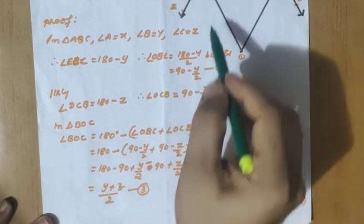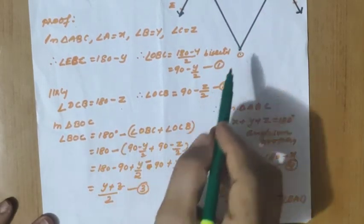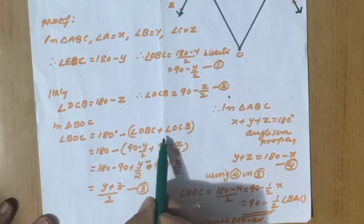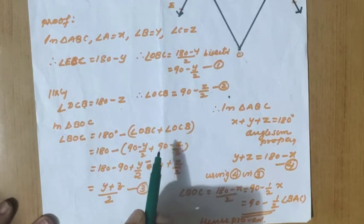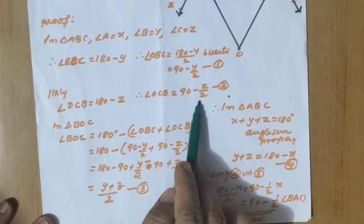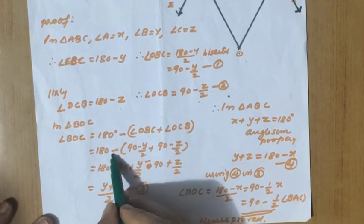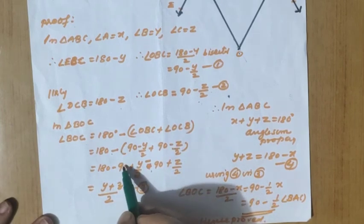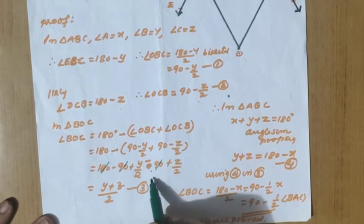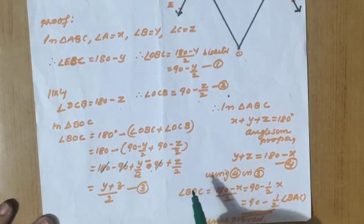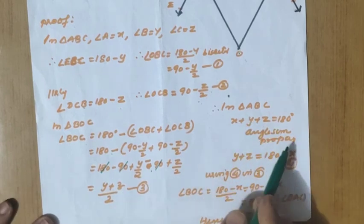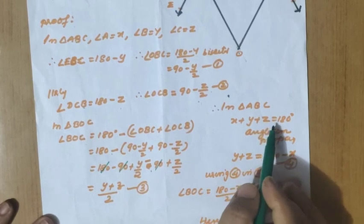Now consider triangle BOC and apply the angle sum property: angle O plus angle B plus angle C equals 180 degrees. So angle BOC equals 180 minus angle OBC plus angle OCB, which is 180 minus 90 minus y by 2 plus 90 minus z by 2. After expanding with the minus sign and cancelling, angle BOC equals y plus z divided by 2. That is equation 3. In triangle ABC, x plus y plus z equals 180, so y plus z equals 180 minus x. That is equation 4.